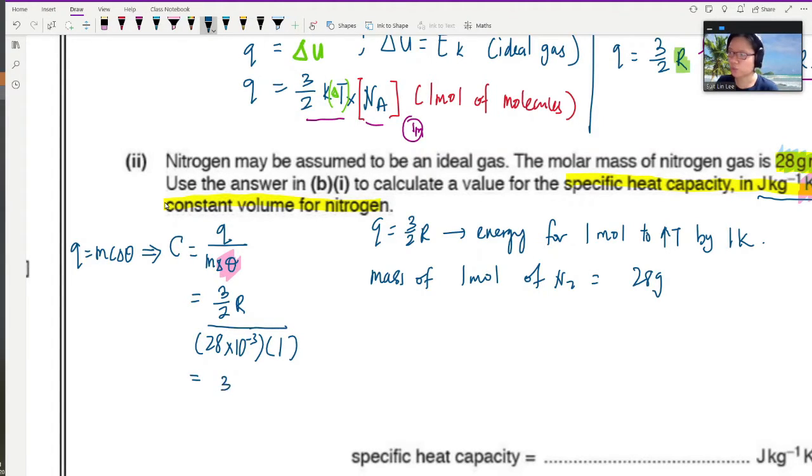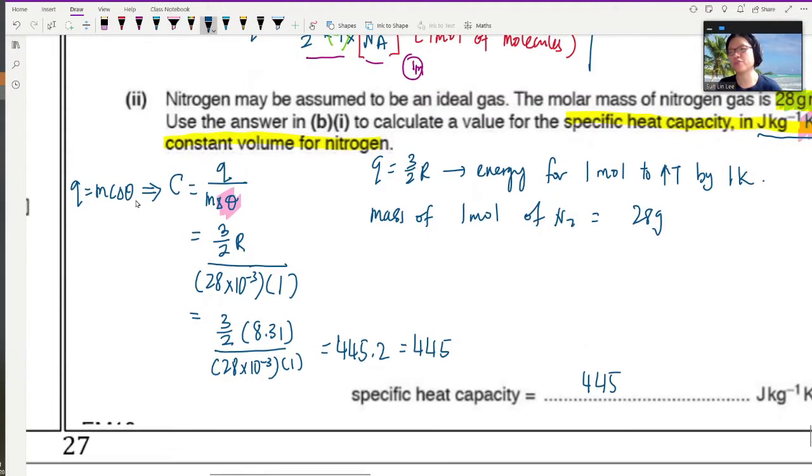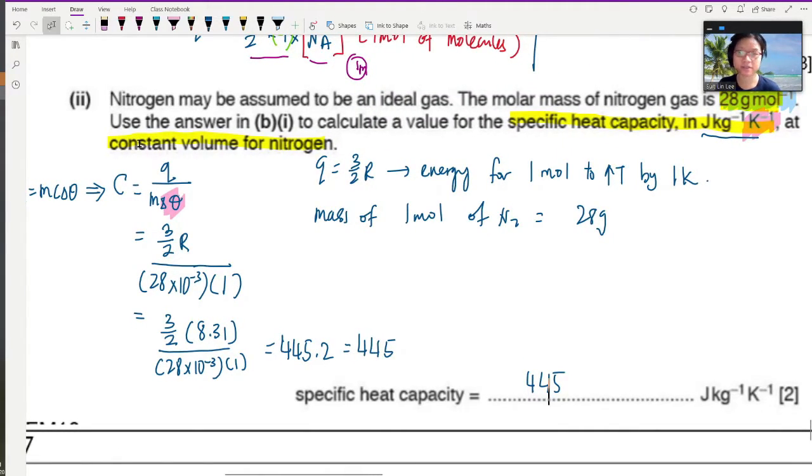28 grams times delta θ, which is 1 degree Celsius. We do have the value for R, R is 8.31. Find it in your table of values. So this would be 28 times 10 to the power of negative 3 times 1. And that will give you the answer after consulting calculator of 445.2. I guess I could just write this as 450 or 445. So 445 J for every kilogram for every Kelvin.